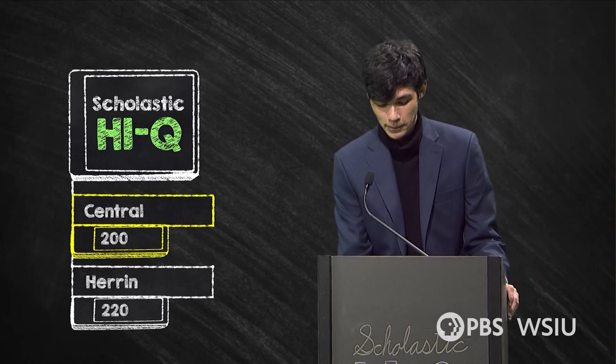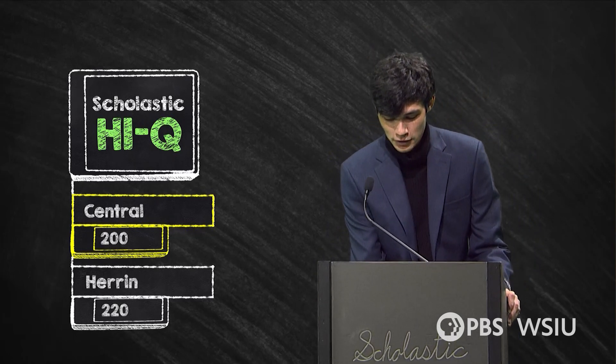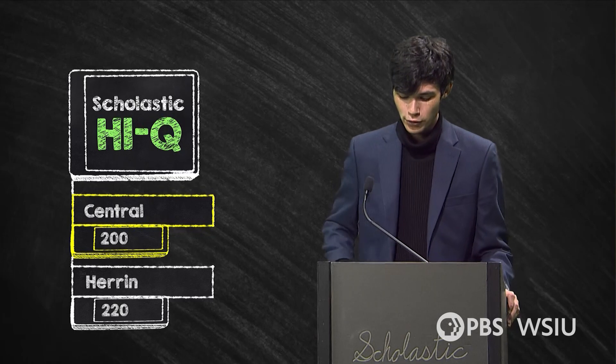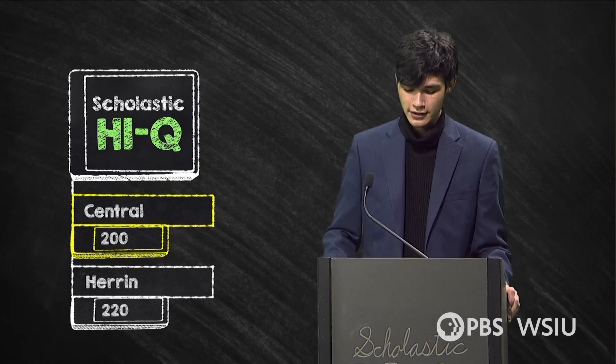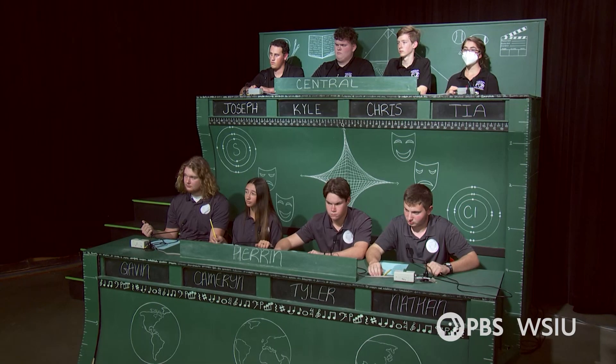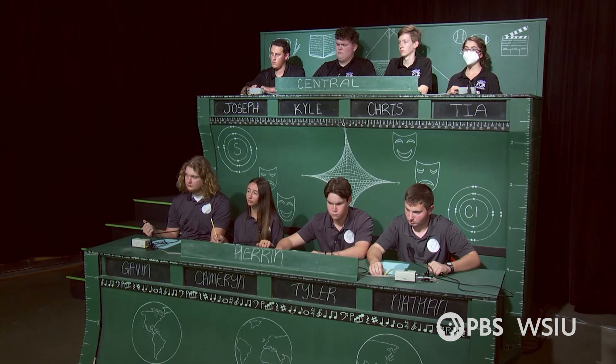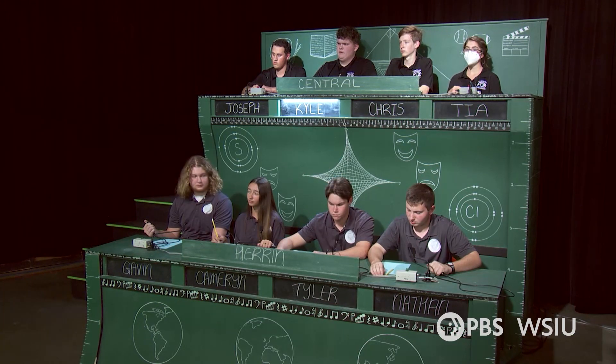Next toss-up: what planet whose poles periodically go through 42 years of darkness has a 98-degree axial tilt? Kyle answers: Uranus. Uranus is correct.